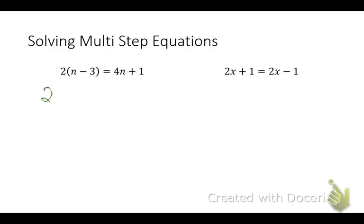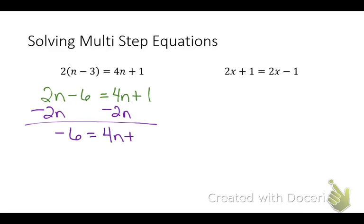2n minus 6 equals 4n plus 1. Did you guys get that part, the distributive? So now what we learned yesterday is we have to look at which one of our n's is the smaller value. What is it? 2n. So that's the one we subtract to the other side. We want to do that so our number stays positive that's connected to the variable.